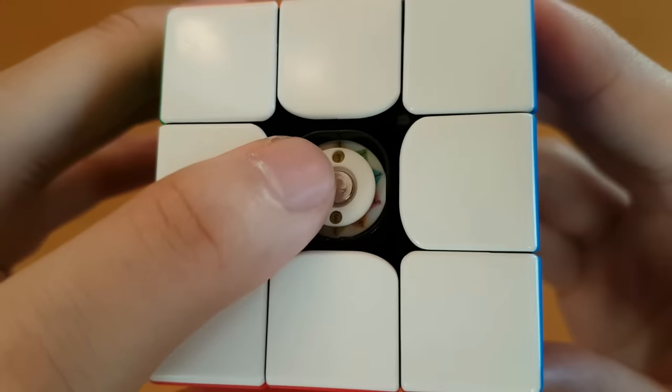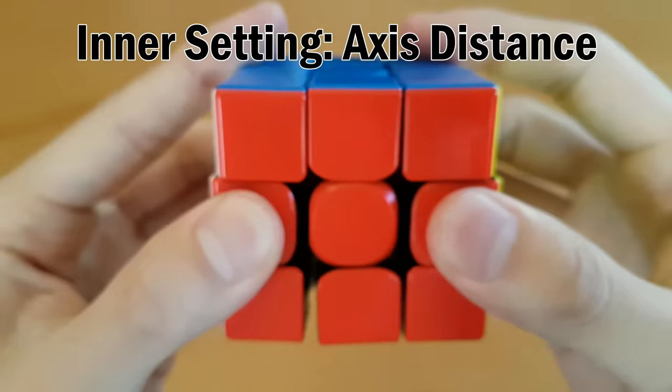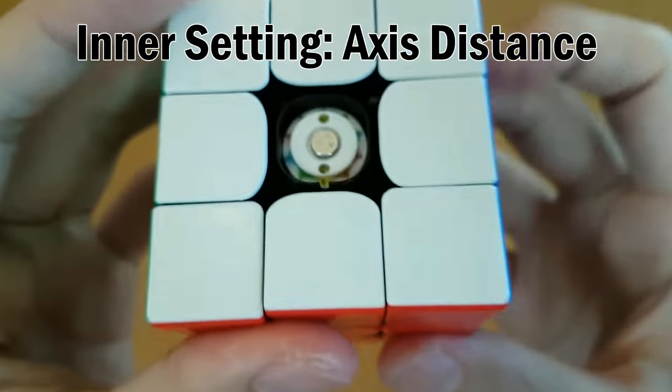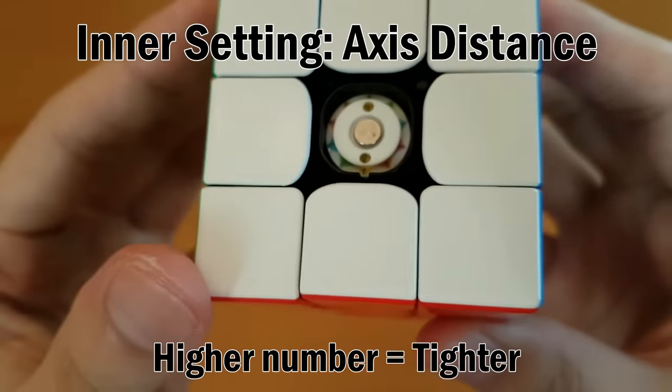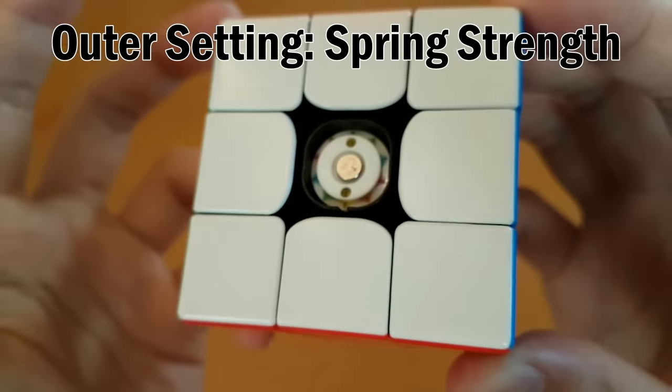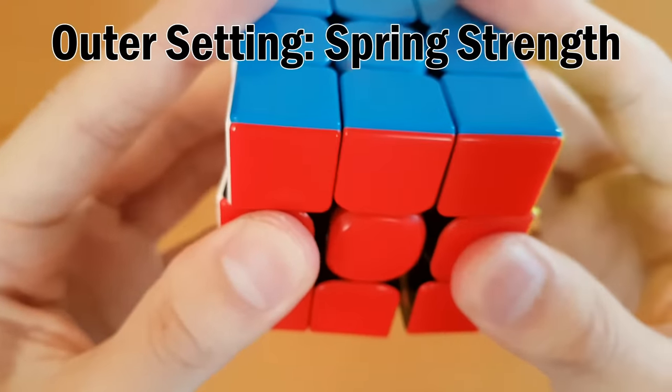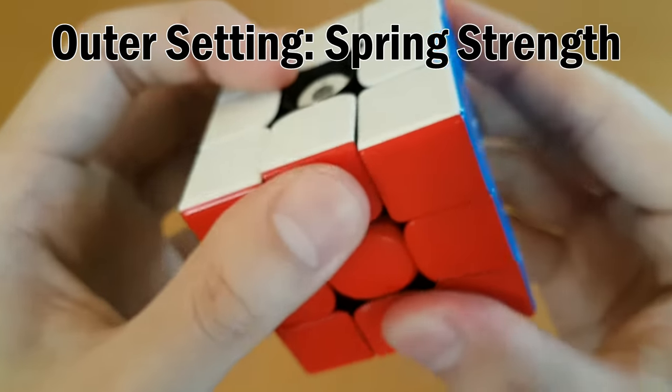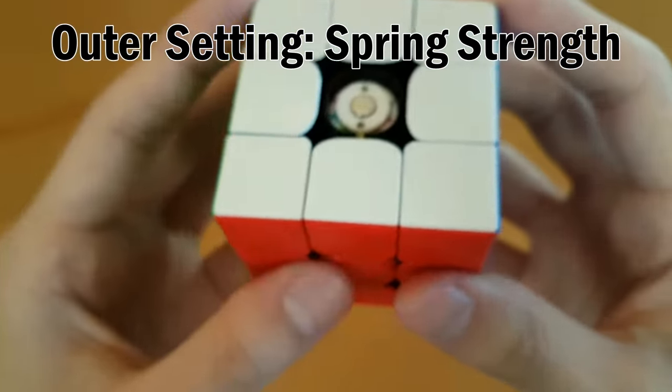On the inside of the circle, there's a number which is the setting for the axis distance. In other words, how far apart you can pull the cube, and you want to think of it as tightness because the higher the number, so if you go all the way to five, then you'll have a tighter cube.